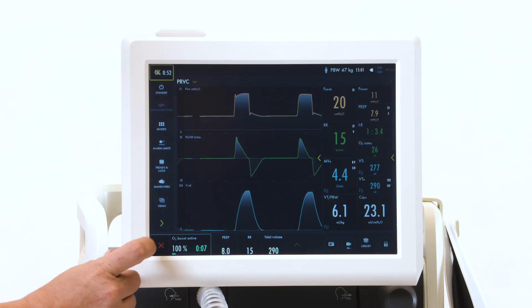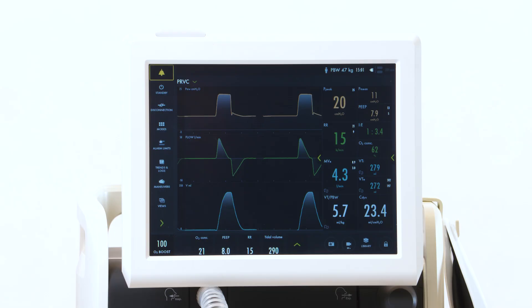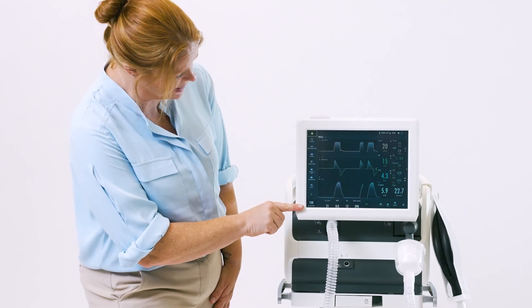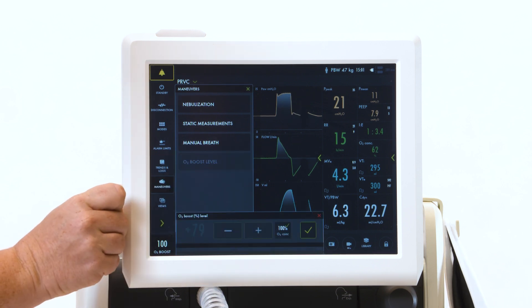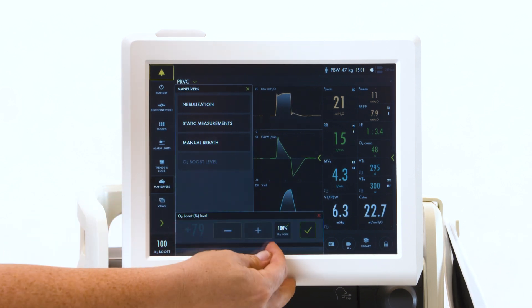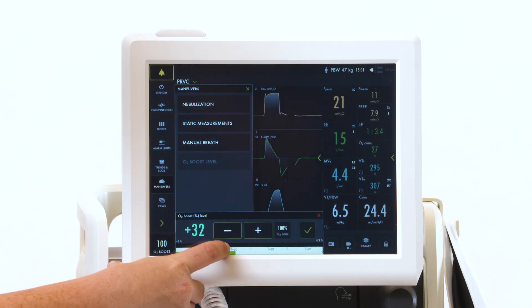If you would like to cancel, hit your X and it will cancel both at the same time. If you'd like to adjust that, go to your maneuvers and select O2 boost level. Currently, you can see it is locked in to 100%. You can unlock it and adjust this to whatever you would like.